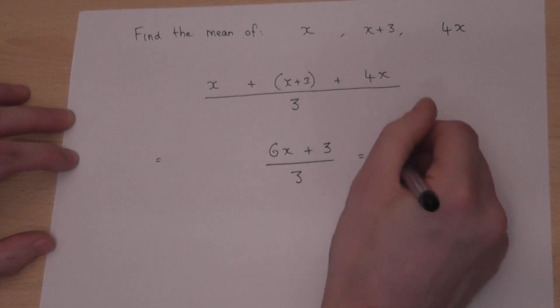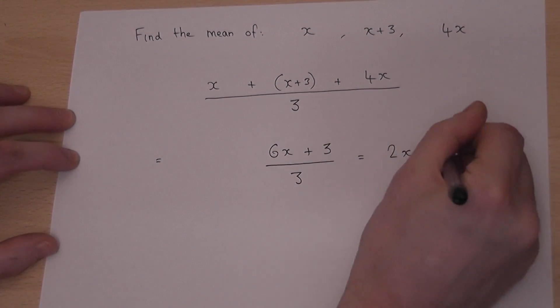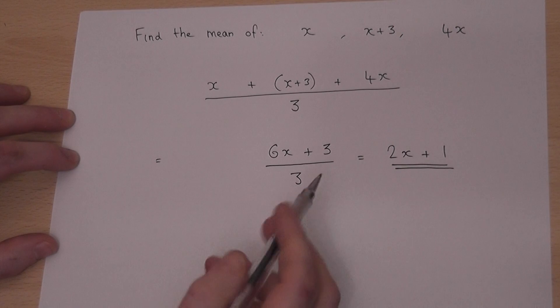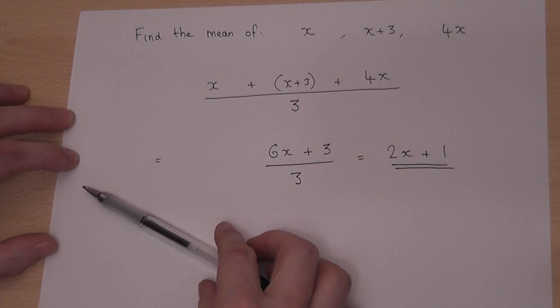Well 6x divided by 3 is 2x, and 3 divided by 3 is 1. So 2x plus 1 is the mean of these three algebraic expressions.